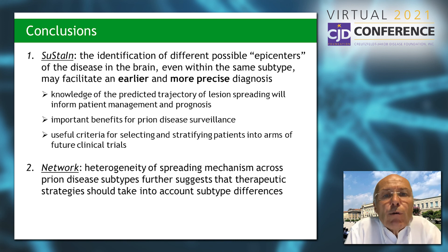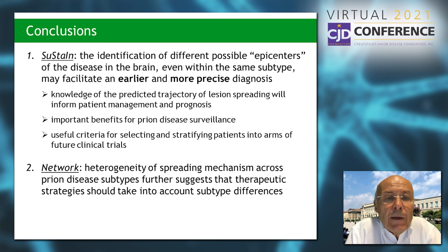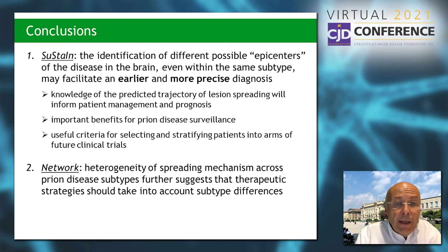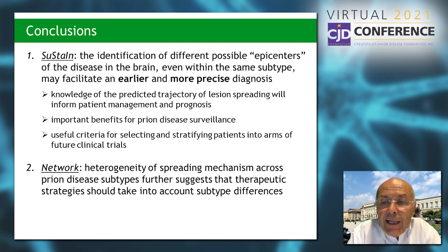In conclusion, the identification of different possible epicenters of the disease in the brain, even within the same subtype, may facilitate an earlier and more precise diagnosis. Knowledge of the predicted trajectory of lesion spreading will inform patient management and prognosis, and will provide important benefits for disease surveillance and useful criteria for selecting and stratifying patients into arms of future clinical trials. The heterogeneity of spreading mechanisms across disease subtypes further suggests that therapeutic strategies should take into account subtype differences.